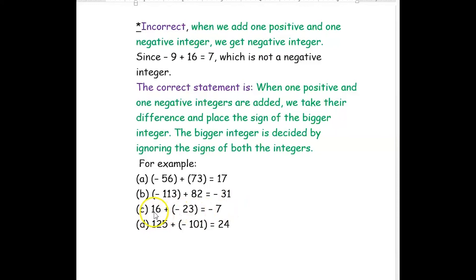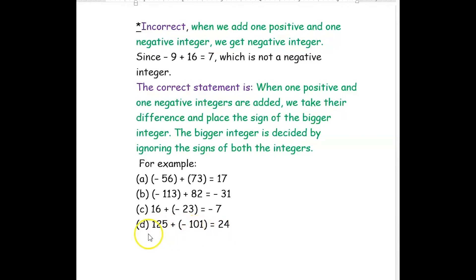Then positive 16 plus negative 23: 23 is the bigger number, its sign is negative, so result is negative, and 23 minus 16 gives 7 — result is negative 7. Similarly, positive 125 plus negative 101: the bigger number is 125, its sign is positive, and 125 minus 101 is 24 — result is positive 24.